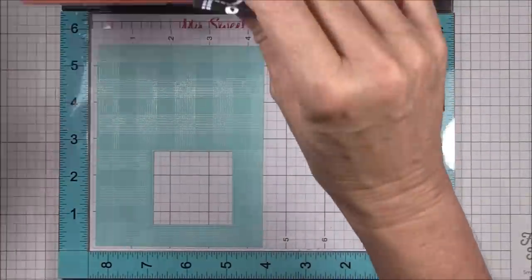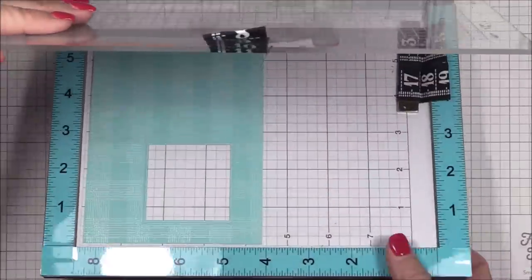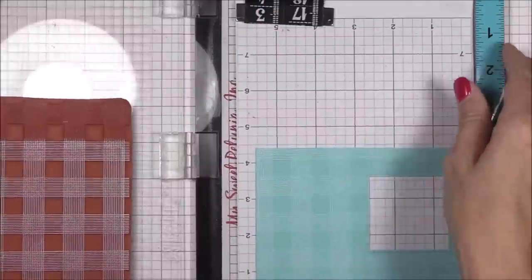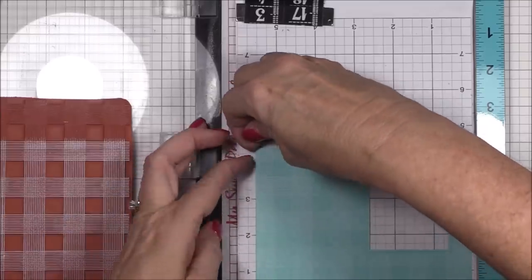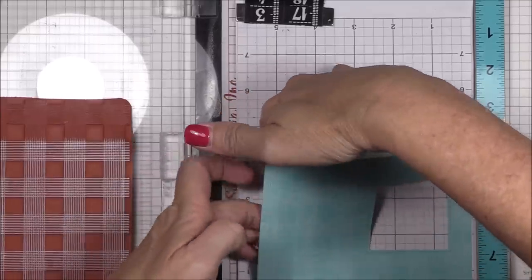You might need to ink up the stamp a couple of times just to make sure that all the pattern gets transferred to the panel. I also heat set the ink off camera so that it wouldn't smudge when I assemble the card.